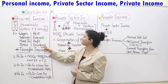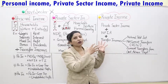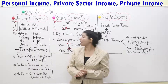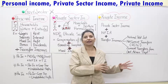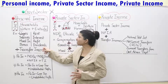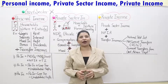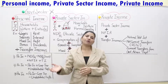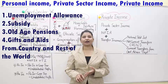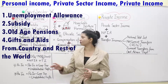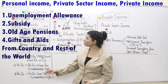Then we have rent, interest, profit, and dividends. Dividends are a part of the profit of a firm that is received by shareholders, so they are included in your personal income. Then we have transfer incomes — simply incomes or transfers received by households or individuals from some other source, such as government subsidies, unemployment allowances, old age pensions, or gifts and grants from anywhere within your country or outside your domestic territory. These are all examples of personal income.